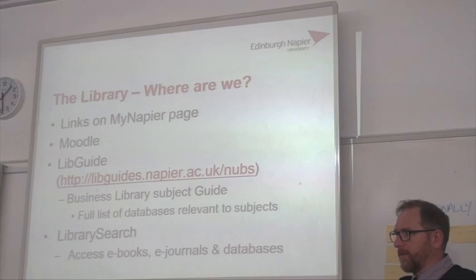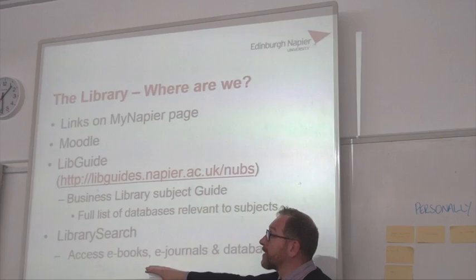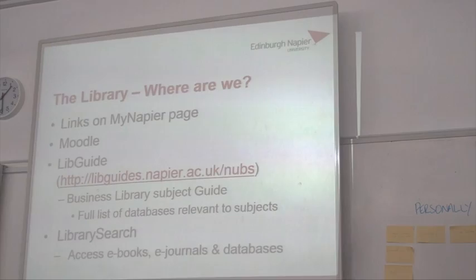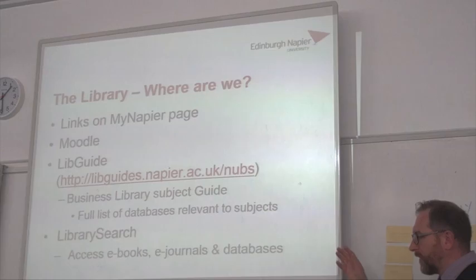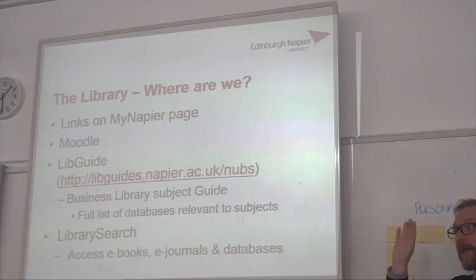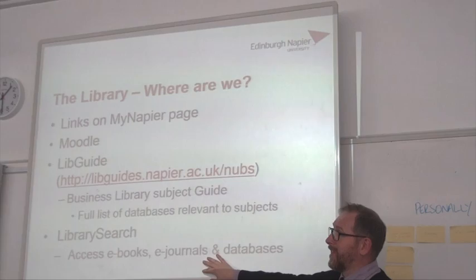We've got Library Search — this is like our library catalogue slash discovery tool. It will tell you whereabouts on the shelf the books are, link you to e-books, and you can also find journal articles, e-journals, databases, and all sorts on it as well. Personally, if I was searching for articles, I would use a database rather than Library Search — I'll explain that in a bit.